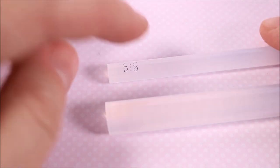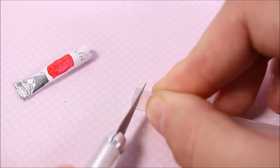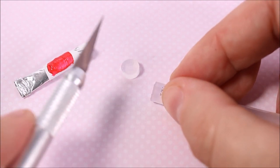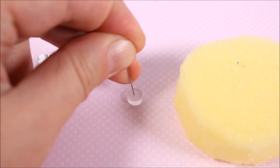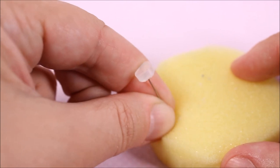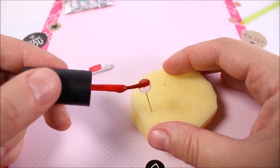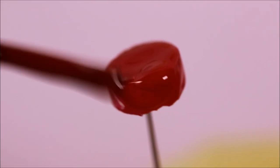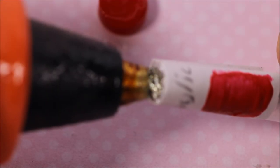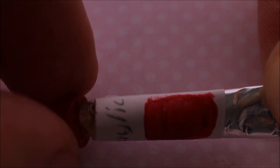For the cap I decided to use a small glue stick, but you can use beads or even roll a piece of paper. I have it on the needle because it's just much more comfortable to paint. And I'm painting them with red nail polish. Then I'm gluing the cap to the tube using the hot glue.